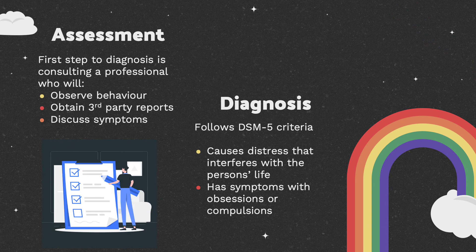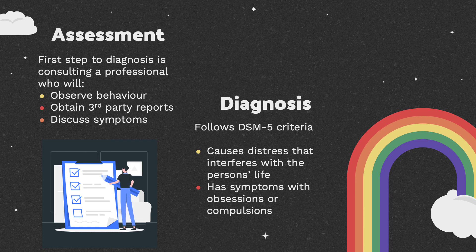In order to receive a diagnosis, someone must first undergo an assessment from a professional. The professional will observe the patient's behavior, discuss some of their symptoms, and obtain third-party reports. Diagnosis follows the Diagnostic and Statistical Manual for Mental Health Disorders, or the DSM-5, which states that obsessions and compulsions must cause significant distress that interferes with the person's life, as well as having symptoms of obsessions and/or compulsions.